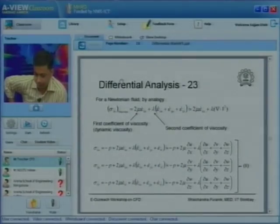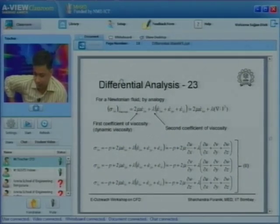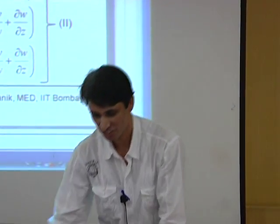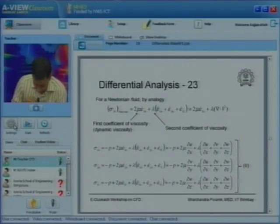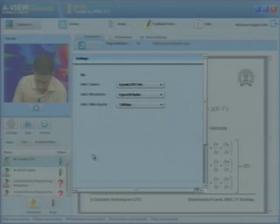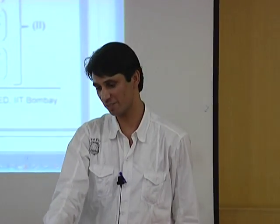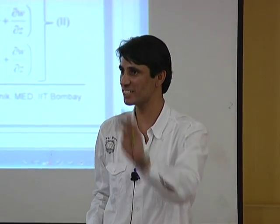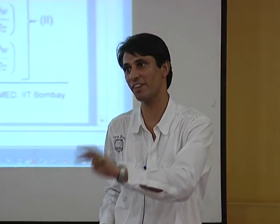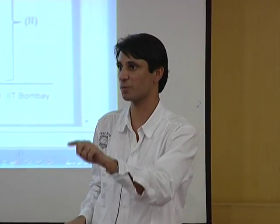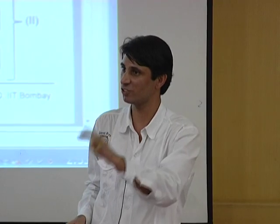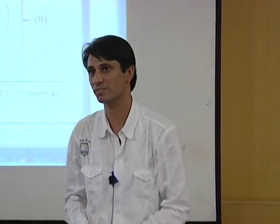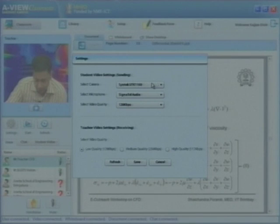Now you can receive the transmission, but you have to configure camera and microphone for the AView software. Press the settings button and select your camera. If you do not get the video device there, that means you have updated Adobe Air — please uninstall Adobe Air, uninstall AView, and reinstall AView again. Along with AView, Adobe Air will automatically install. Then select your device and your microphone.